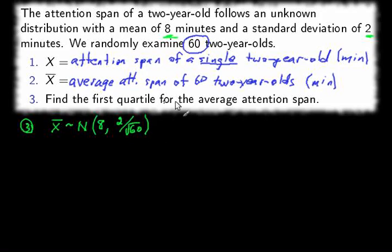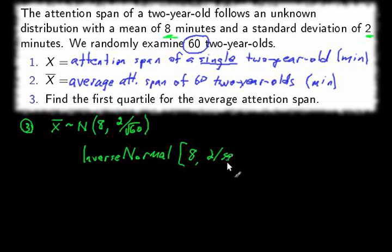Okay, and we want the first quartile. So that means we're asking for inverse normal, mean eight, standard deviation two divided by the square root of 60. And first quartile means 25th percentile. So we put in 0.25 and then ask GeoGebra for this number.